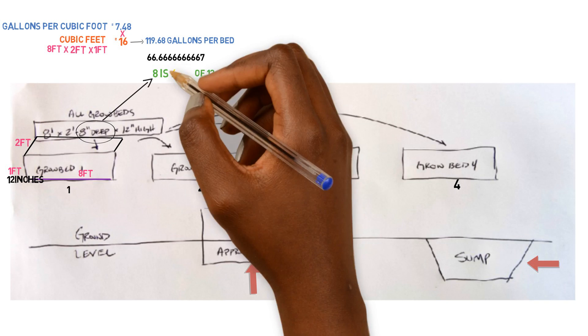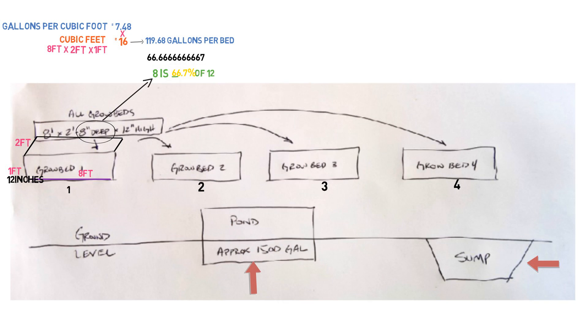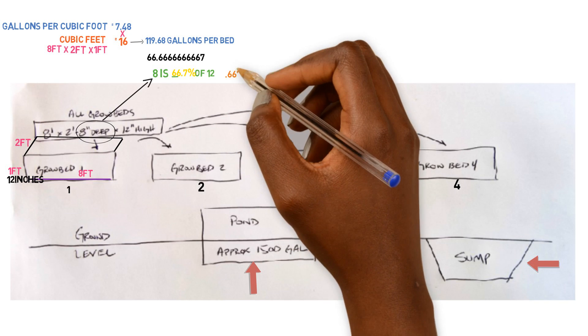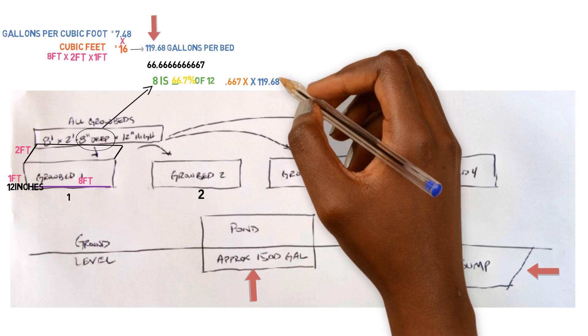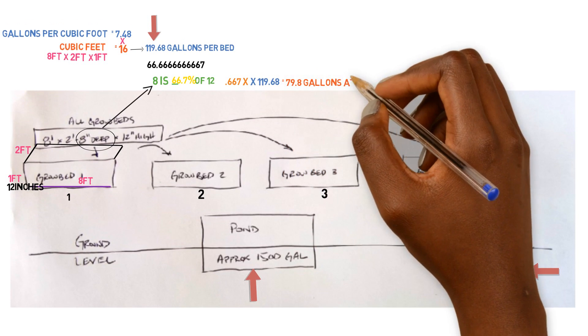So we'll just say 66.7%. So we will multiply that 66.7%, times the amount of gallons inside of the system. So we've got to convert this into a decimal and that'll give us 0.667. So we'll take 119.68 gallons, if it was filled up all the way, and then we'll multiply that by 0.667, because that's going to give us the eight inch depth. And that's going to give us 79.8 gallons per bed. This is at eight inches.